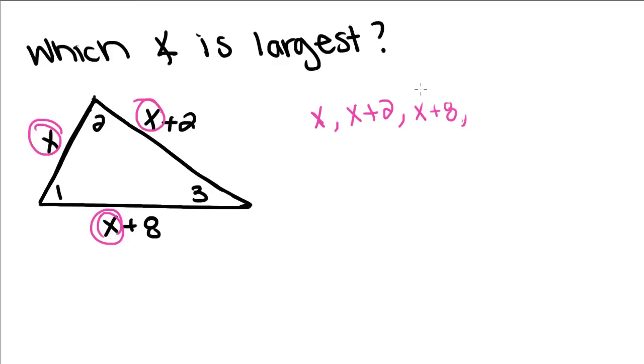And then x plus 8, because this is saying 8 more than x, and this is only 2 more than x. And since 8 is greater than 2, this is our order. So this is from least to greatest.